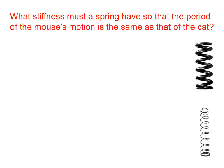Let's say now that we want the cat and the mouse to oscillate back and forth at the same rate. In other words, what stiffness must a spring have so that the period of the mouse's motion is the same as that of the cat?